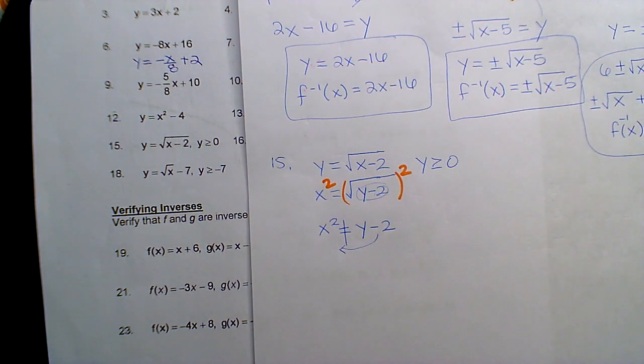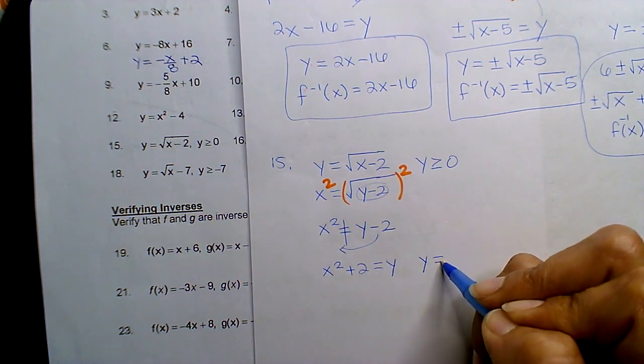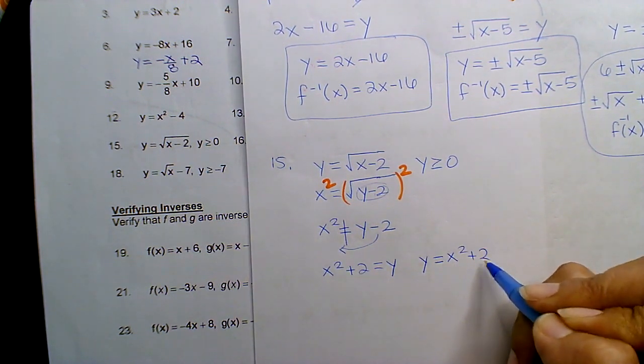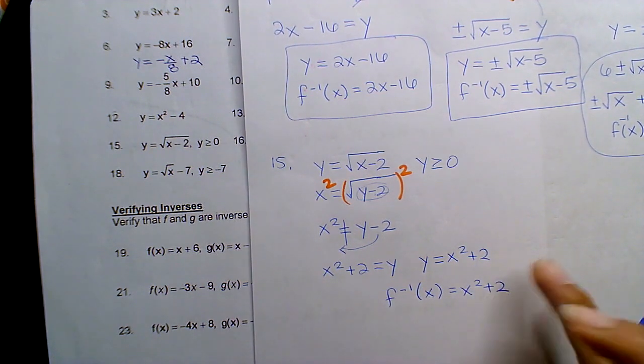So I get X squared plus two equals Y, or you can switch it, or you can write f inverse. It's all the same.